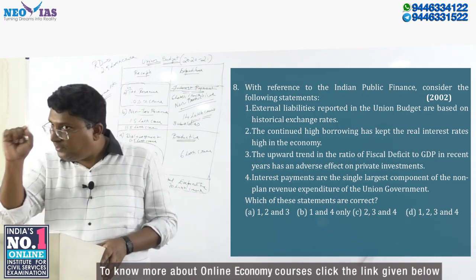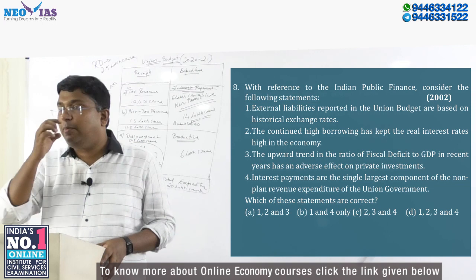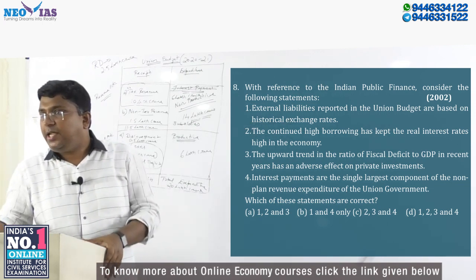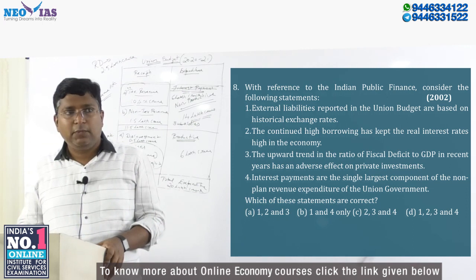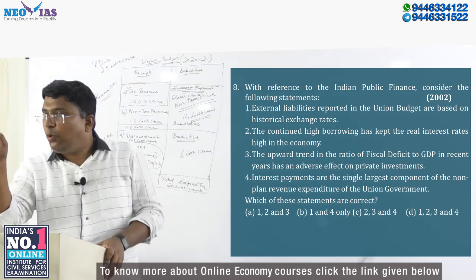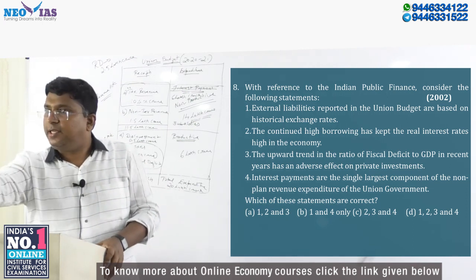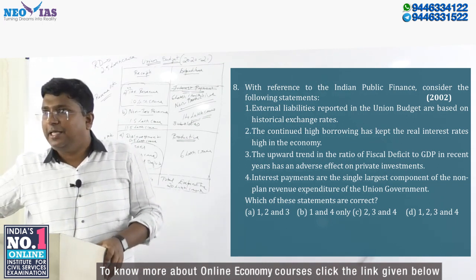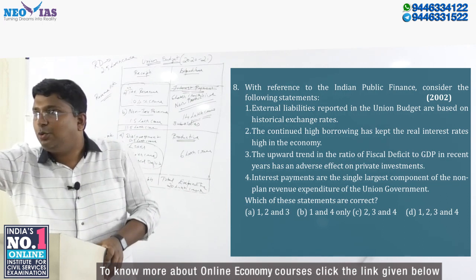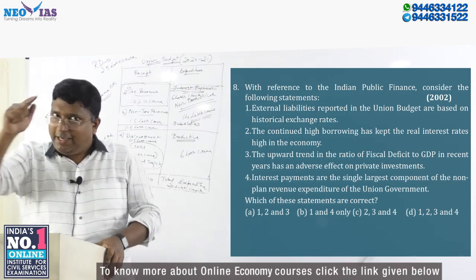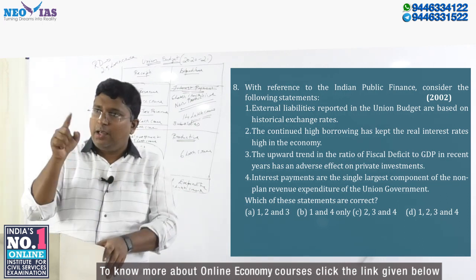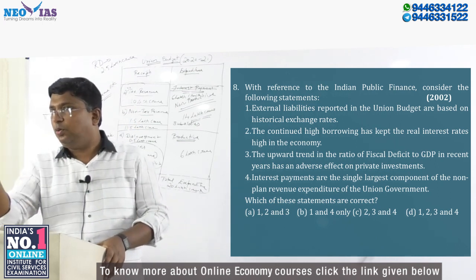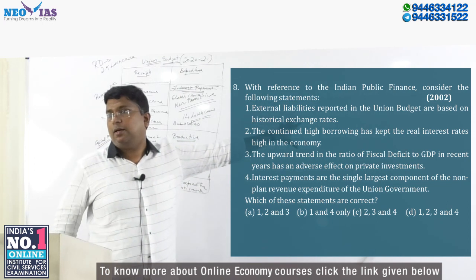Now what does this historical exchange rate mean? Which year were you borrowing from outside the country — that is external debt — what is the exchange rate at that time? For example, this is the 2002 question. So if the government borrowed in 1996, when the government borrowed in 1996, the exchange rate would be, for example, one dollar is 42 rupees. Now it is 73–74. That time it was one dollar is 42. So how will it be calculated? Into 42 — however many dollars — into 42. And that money will be reflected in the budget.